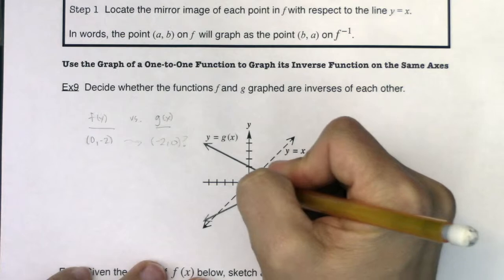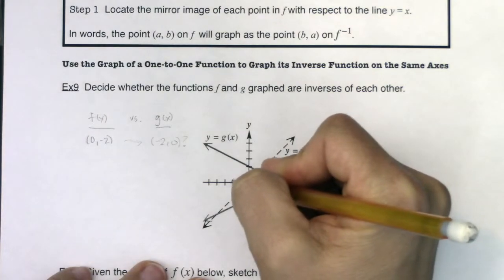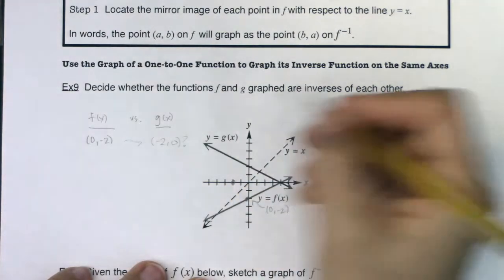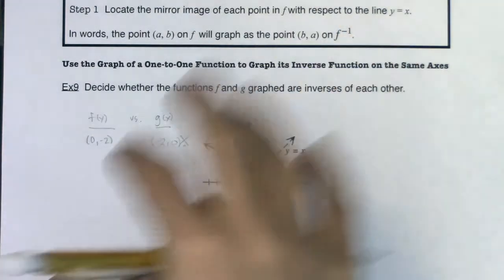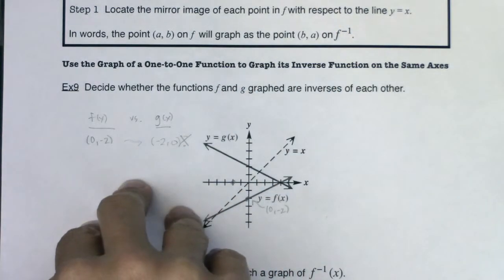Let's go find out. If I go 1, 2, 0, is that ordered pair on g of x? No. So there's another way to say, hey, these are not inverse functions of one another.